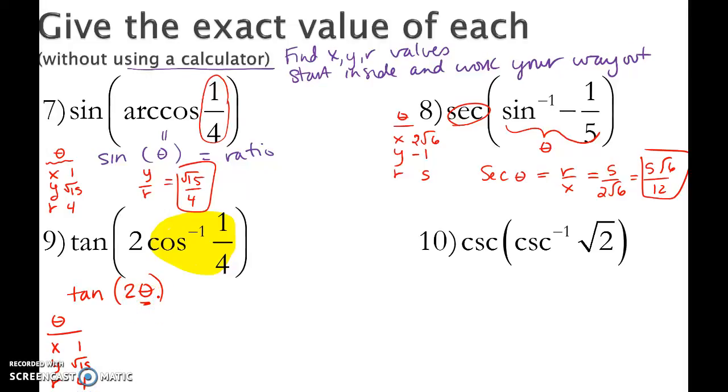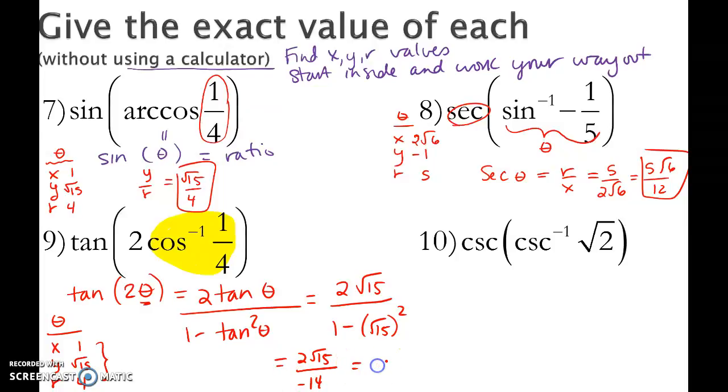So now, let's use our tangent 2 theta formula. 2 tan theta divided by 1 minus tan squared theta. So based on these values, my tangent ratio is root 15. So I have 2 times root 15 over 1 minus root 15 squared. So we're going to get 2 root 15 over negative 14 or negative root 15 over 7.